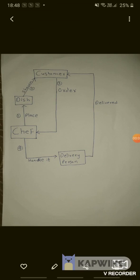Now in short, I will explain the control flow of my app. You can see the map or the flow. First, the chef will post a dish in the app. The app will show that dish to the customer. The customer will decide, select, and place the order, and the chef will get the notification of that order. He has the choice to decline or accept that order.